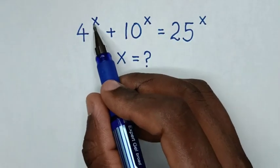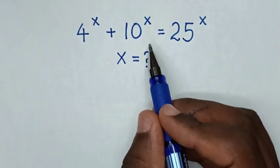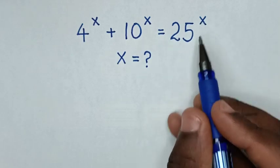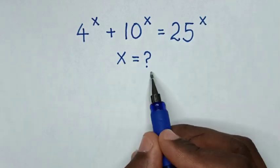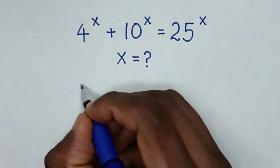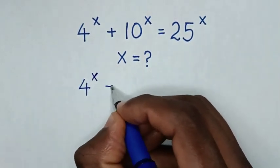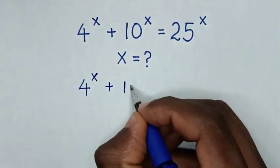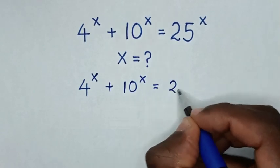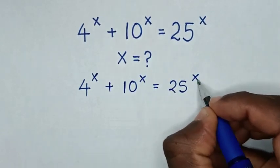How to solve 4 power x plus 10 power x is equal to 25 power x, to find the value of x. So from this our equation, which is 4 power x plus 10 power x is equal to 25 power x.